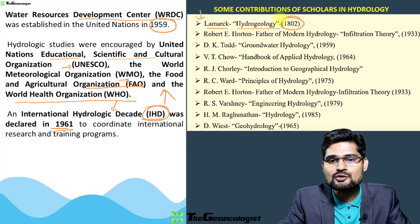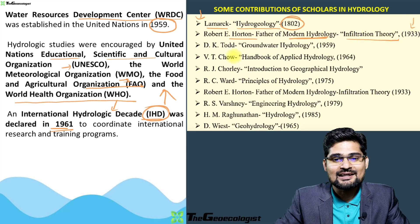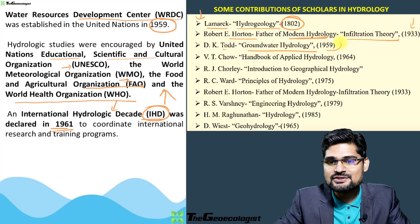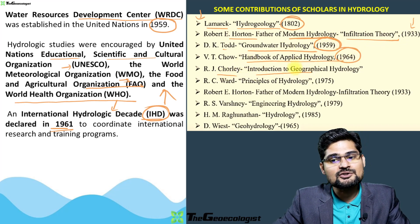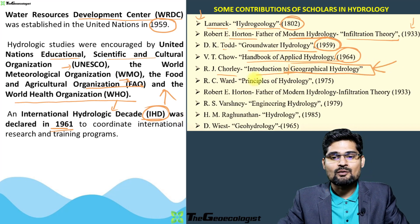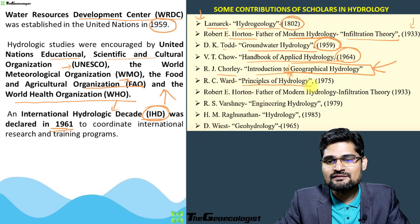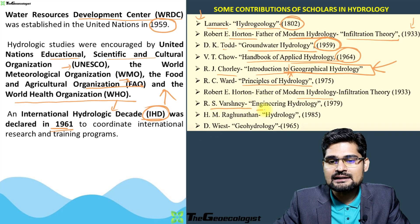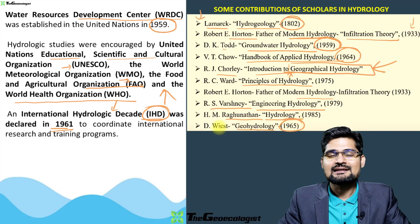Some key scholars and their contributions: Lamarck wrote Hydrogeology in 1802; Robert Horton, father of modern hydrology, gave the infiltration theory in 1933; D.K. Todd published Groundwater Hydrology in 1959; V.T. Chow compiled the Handbook of Applied Hydrology in 1964; Chorley's Introduction to Geographical Hydrology is a must-read for geography students; R.C. Ward wrote Principles of Hydrology; Varshney's Engineering Hydrology and Raghunath's Hydrology are important references; and Wiest's Geohydrology of 1965 is also notable.